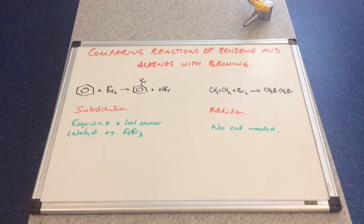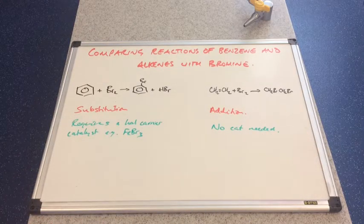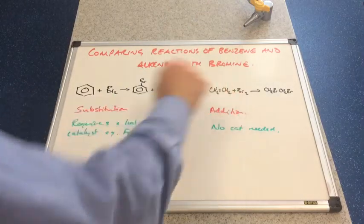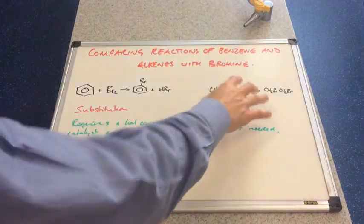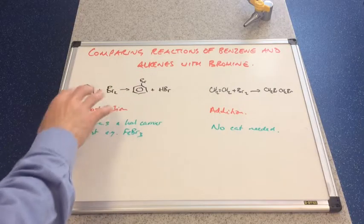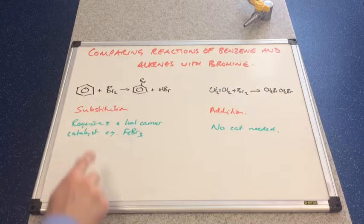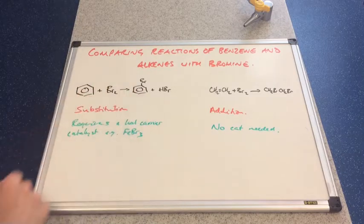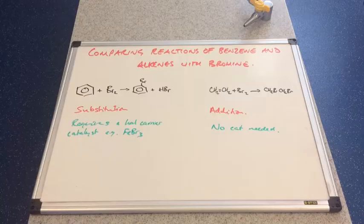So if you were carrying these reactions out, you would notice that there would be a decolorization of bromine here. Without the catalyst, nothing would happen in this reaction. It's only when the halogen carrier catalyst is present would the reaction take place and the bromine would be decolorized.